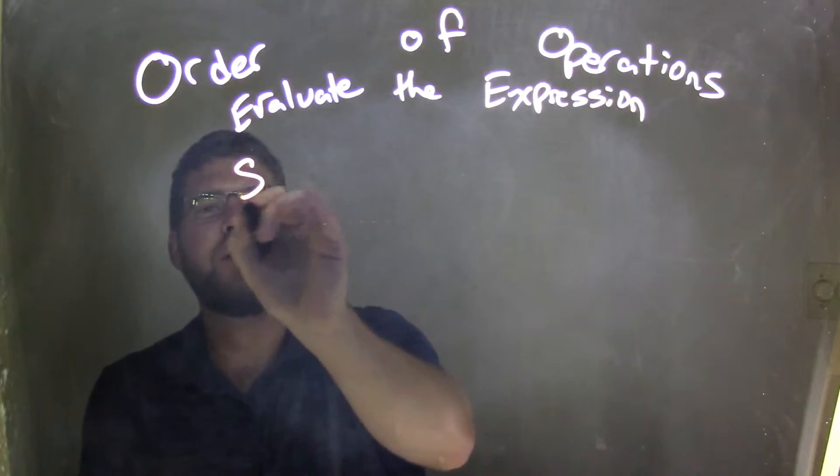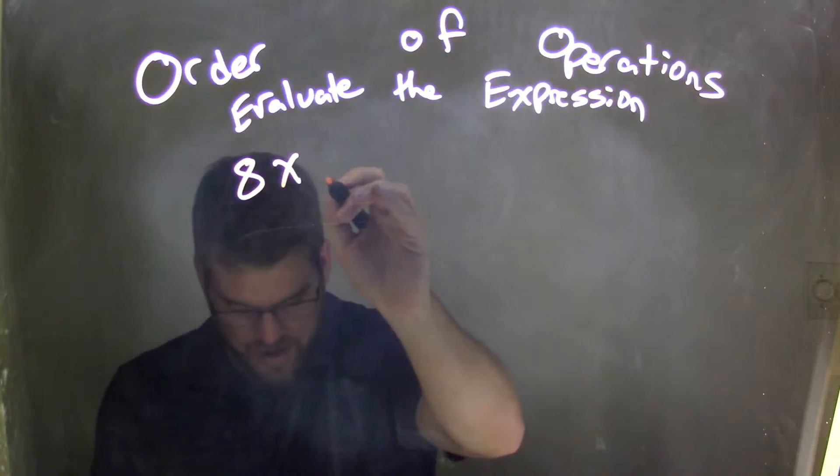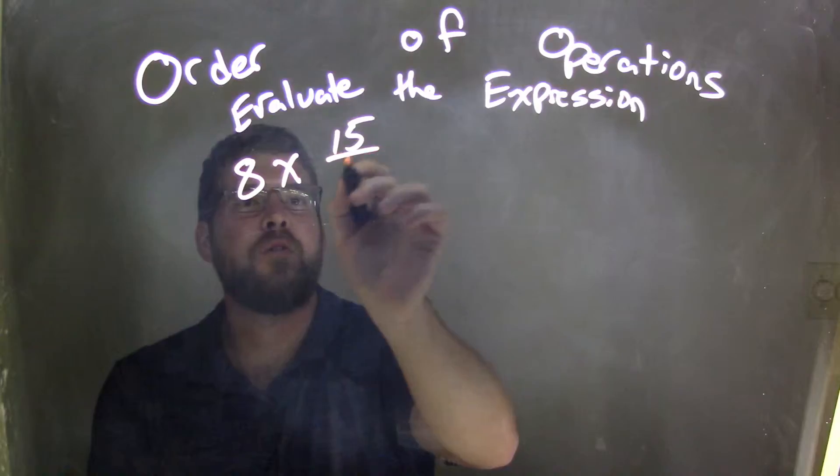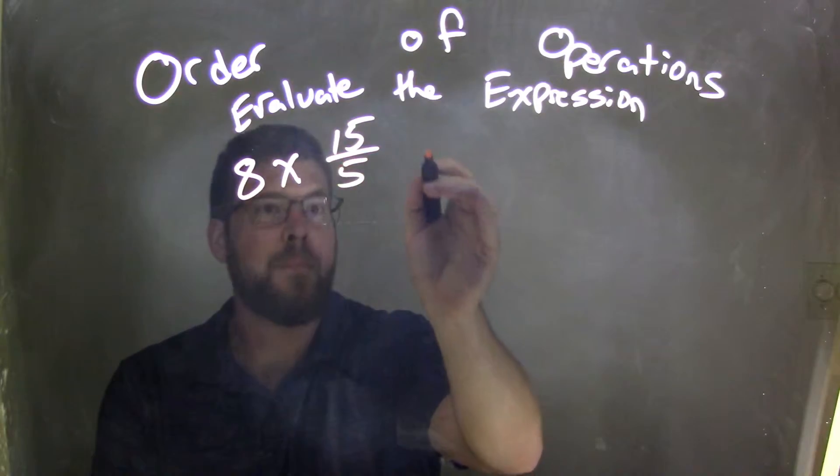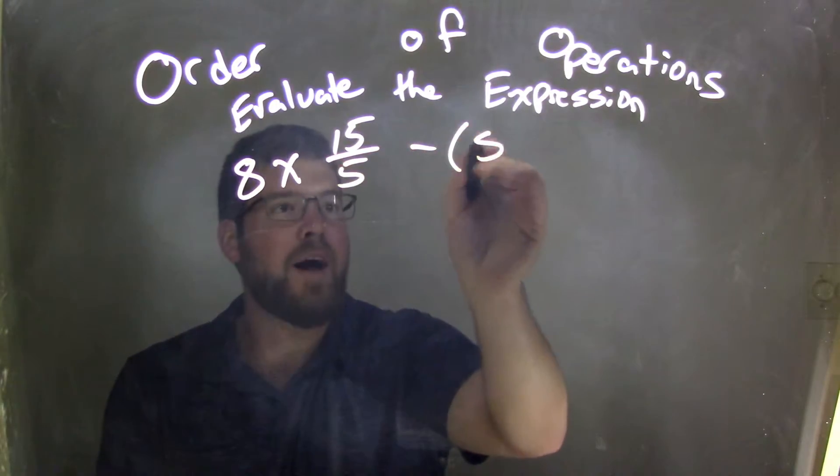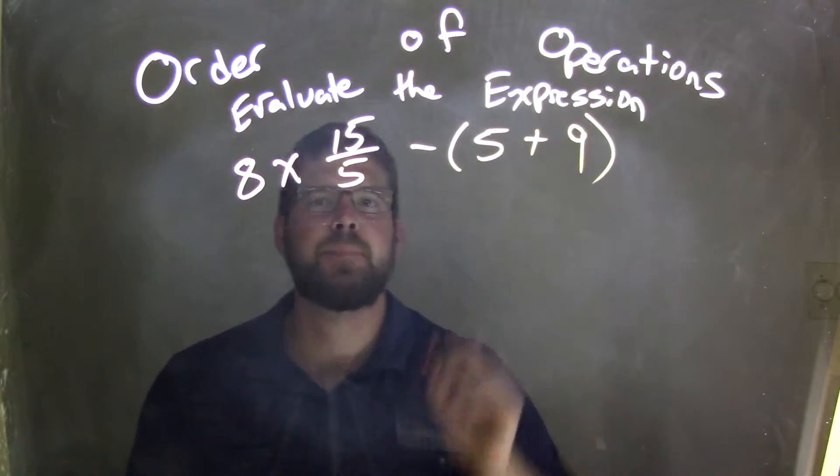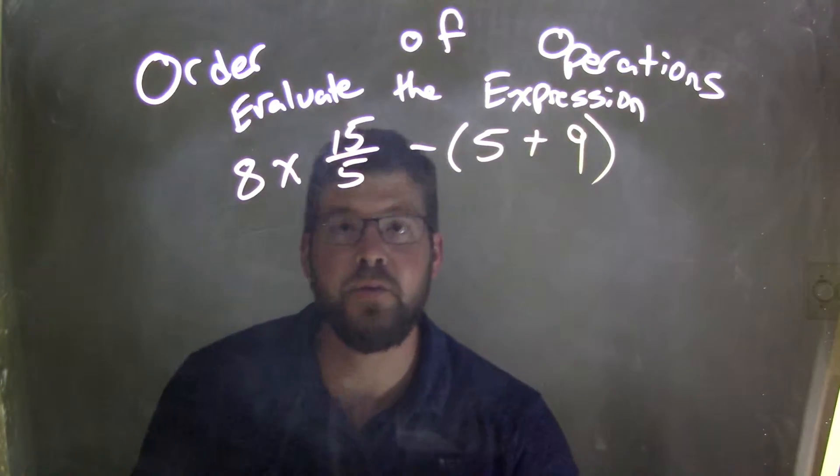So if I was given 8 times 15 over 5 minus 5 plus 9, this is the expression here.